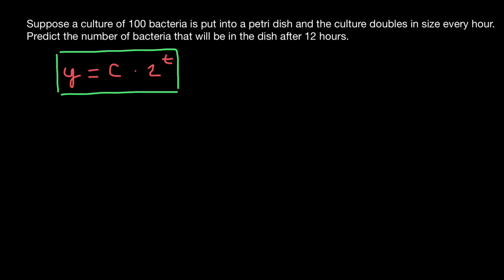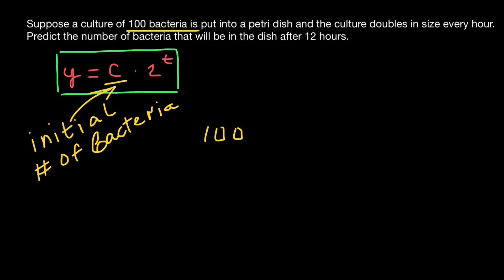In this formula, c stands for the initial number of bacteria, and it is 100 bacteria. So 100 times two — and two here means doubling. Take a look: we are told that this culture doubles in size every hour.